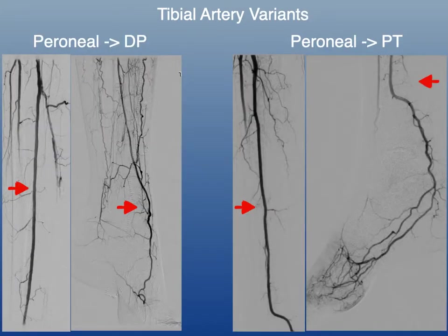Other important tibial artery variants include the peroneal artery continuous into the dorsalis pedis artery, and the peroneal artery continuous into the posterior tibial artery. The tip-off here usually is a diffusely enlarged peroneal artery with either absence or hypoplasia of the other tibial vessels.